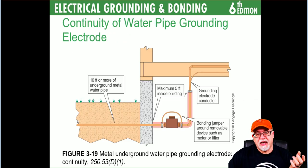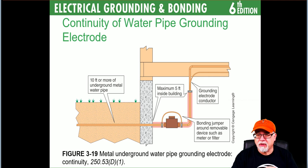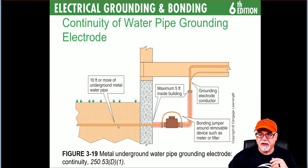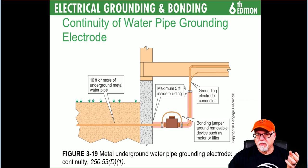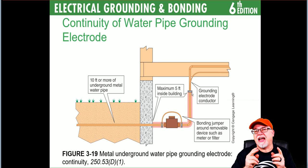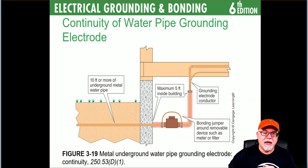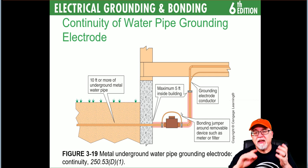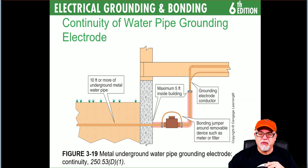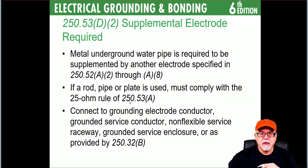Regarding continuity: if you have an underground water pipe ground and there's a water meter that can affect any connection on the load side, you have to bond over that water meter to maintain the integrity of the connection. If the meter is removable, that can break the path to the electrode downstream. You're making your connection within the five-foot point of entry — if a meter can be removed and affect that integrity, you put a jumper on it.